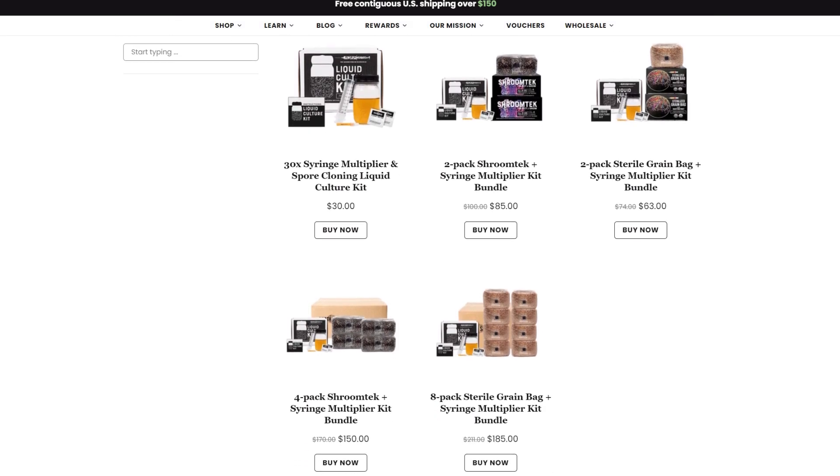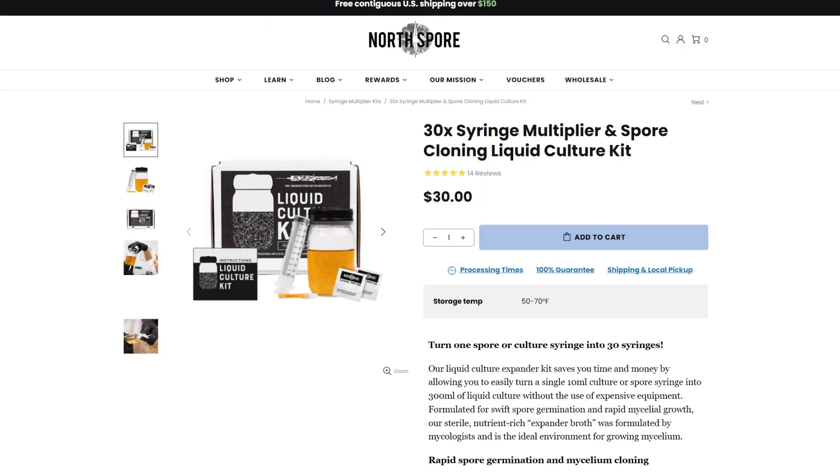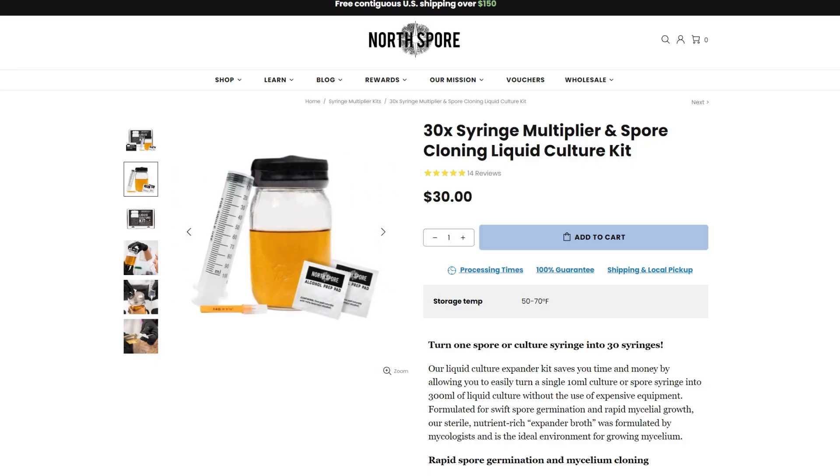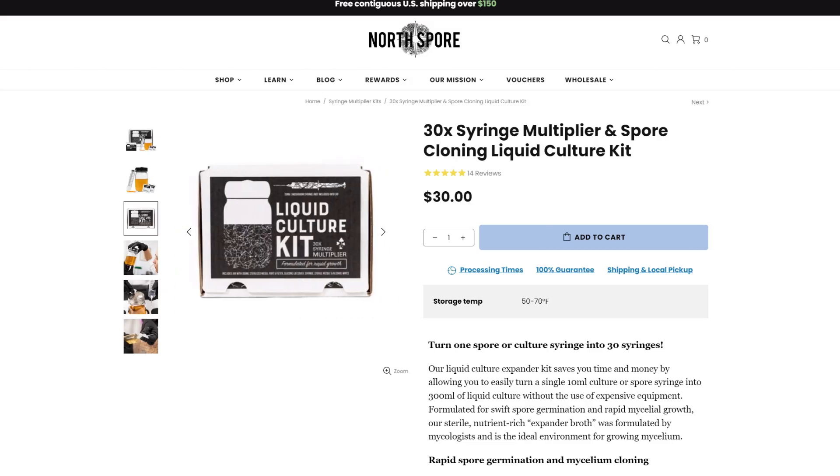We're going to be using the NorSpore liquid culture kit. With this kit, you can turn one syringe, it doesn't matter if it's liquid culture or a multi-spore syringe, you can take that one syringe, actually less than that one syringe, and we're going to be able to turn it into 30.